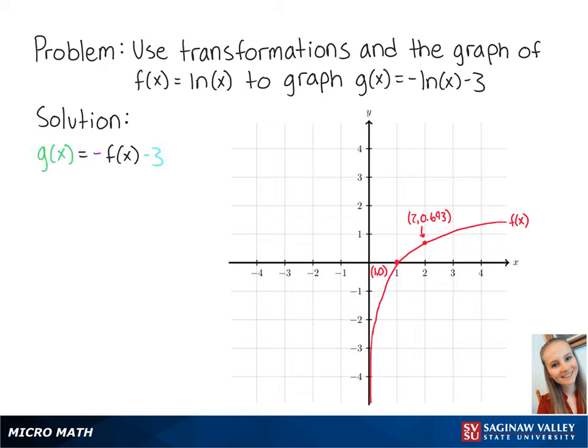g of x equals negative f of x minus 3. The negative sign means that we will reflect the graph over the x-axis.